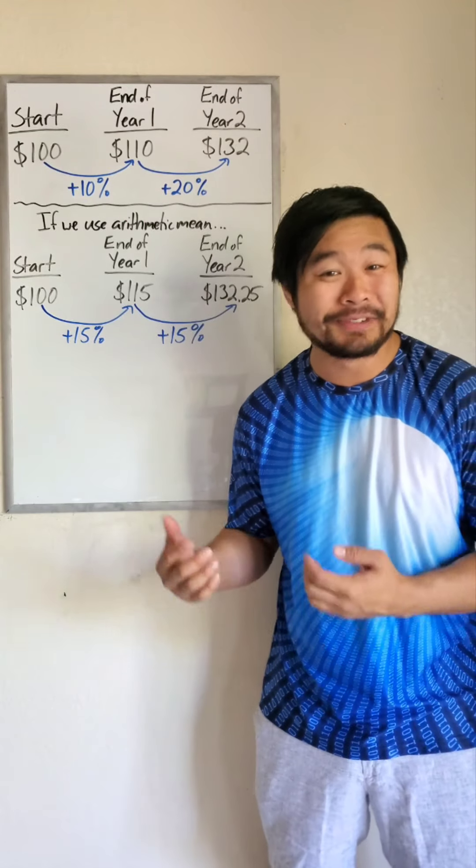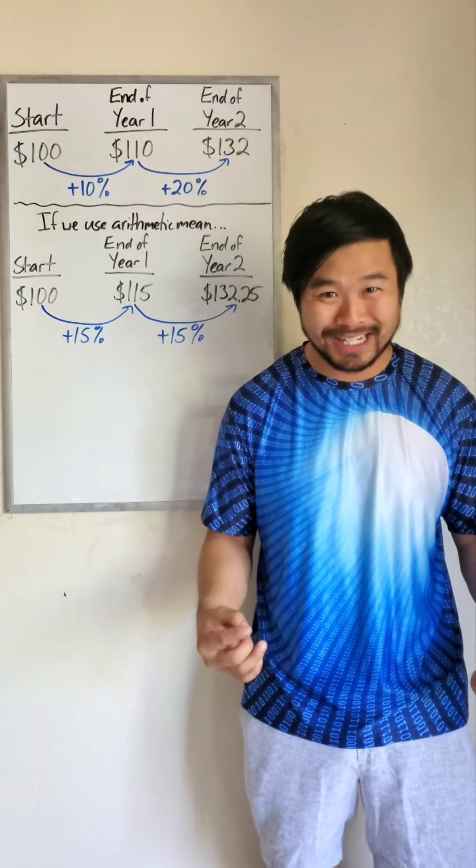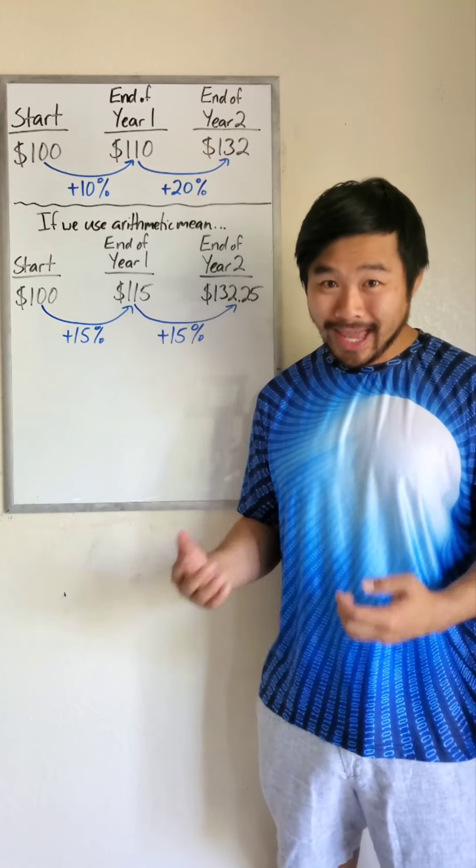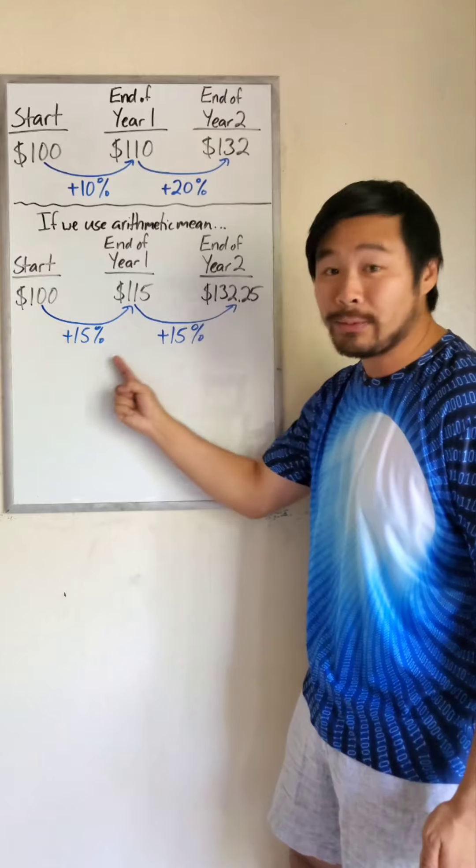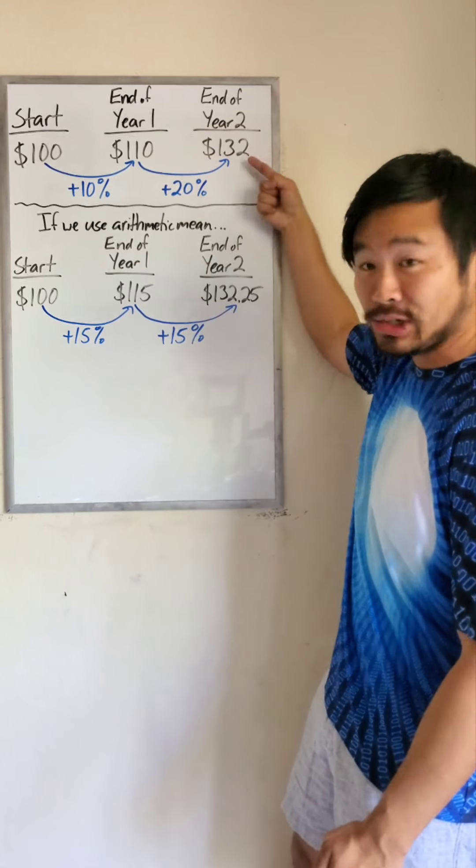Now the arithmetic mean of 10% and 20% is 15%. So if we use the arithmetic mean to find the average annual percentage increase, we see that we wouldn't get the same result as what actually happened.